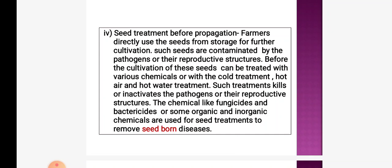Seed treatment before propagation: farmers directly use seeds from storage for further cultivation, but such seeds are often contaminated by pathogens and their reproductive structures. Before cultivation, seeds can be treated with various chemicals. Cold treatment, hot air, and hot water treatment kill or inactivate the pathogen. Fungicides, bactericides, and organic or inorganic chemicals are used for seed treatments to remove soil-borne diseases.